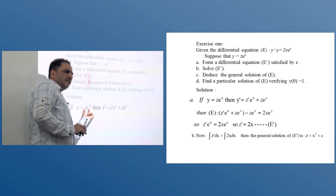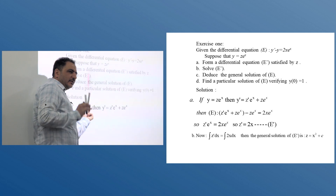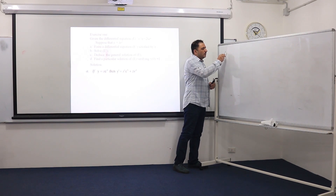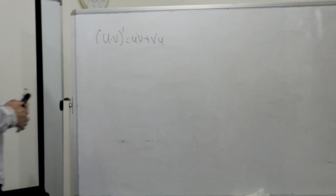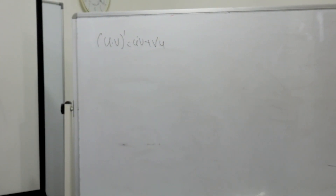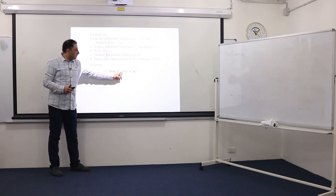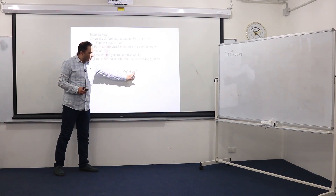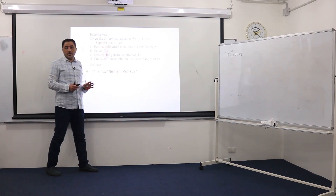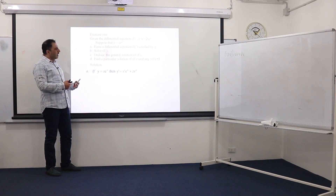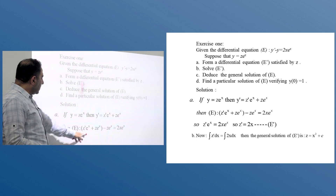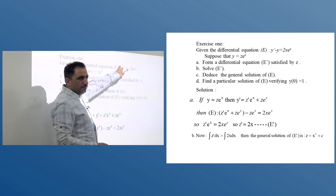Using the product rule (UV)' = U'V + UV': y' = z'·e^x + z·e^x. Now we replace y' and y in the differential equation E. We obtain: (z'e^x + ze^x) − ze^x = xe^x, in terms of y' and y replaced.